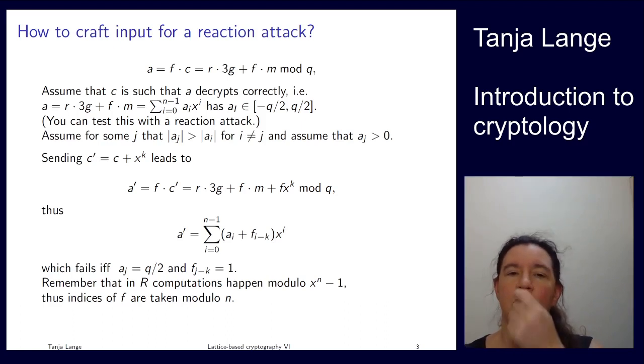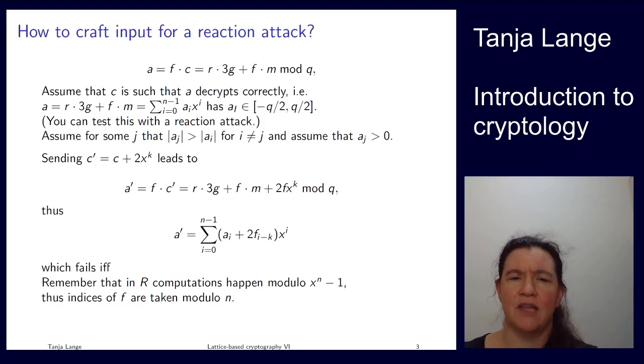Okay, now all of those continue to work if a_j wasn't q over 2. So let's imagine we have tried all the powers, we've tried k from zero till n minus one, and we have tried this minus one as a coefficient and we tried this plus one coefficient, and Bob just keeps getting back to us saying, yep, decrypts, what's the problem? Well, let's try to kick him out of his comfort zone.